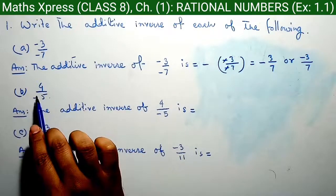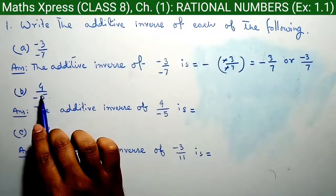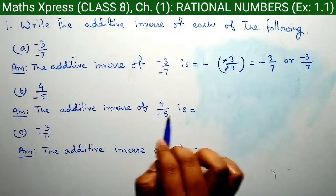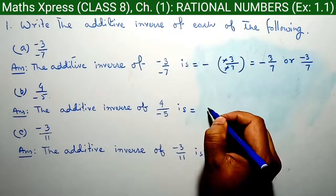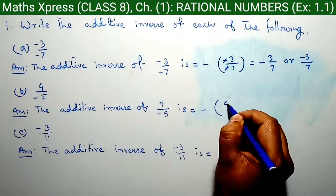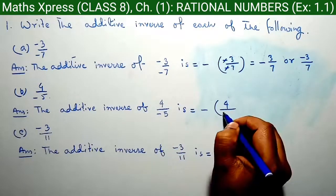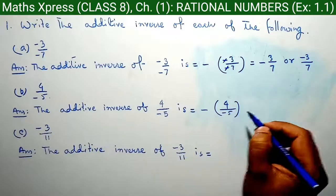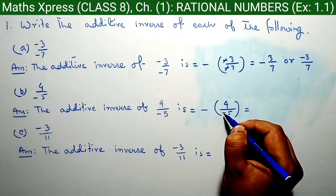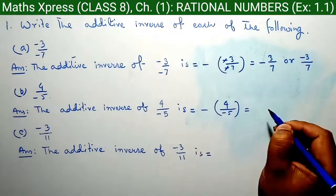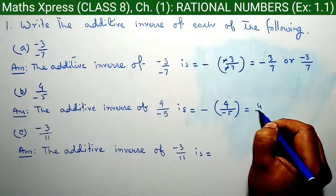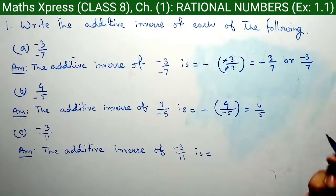Question B: 4 by minus 5. The additive inverse of 4 by minus 5 is equal to minus 4 by minus 5. Therefore, minus and minus become plus, so 4 by 5 is our answer.